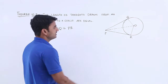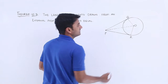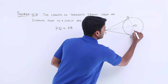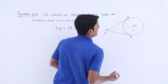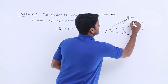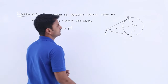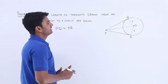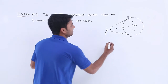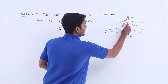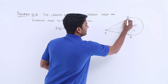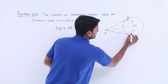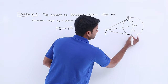Here, OR is the radius of the circle — let us consider it as r, and OQ is also r. We know, based on our previous theorem, that the angle between the radius and the tangent at the point of contact will be 90 degrees. So angle OQP is 90 degrees, and angle ORP is also 90 degrees.